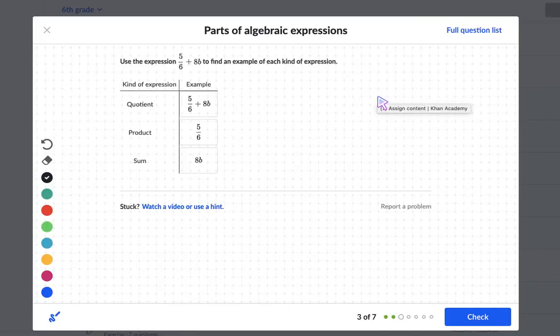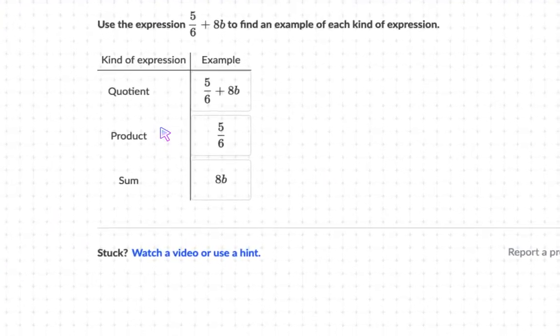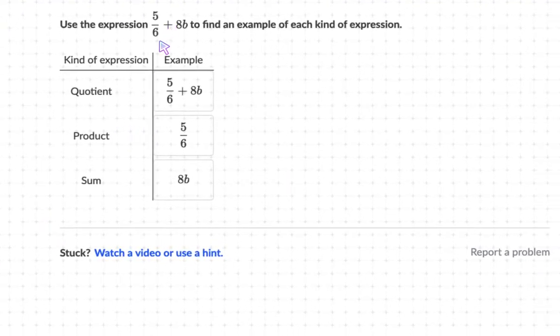Alright, so let's take a look at this example. They want you to use the expression 5 sixths plus 8b to find an example of each kind of expression. So we want to identify the quotient, the product, and the sum. Go ahead and pause the video and try this on your own first.